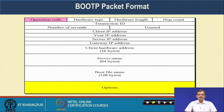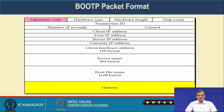Looking at the BOOTP packet format, it is much richer than what we saw in RARP. Fields include: operation code, hardware type, hardware length, hop count, transaction ID, number of seconds passed, an unused portion, client IP address, your IP address, server IP address, gateway IP address, client hardware address, server name, boot file name - which is downloaded and executed during bootstrap - and some optional features.